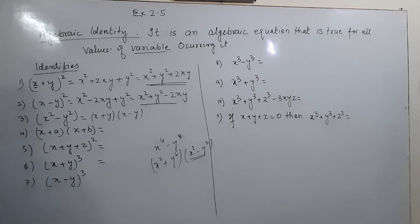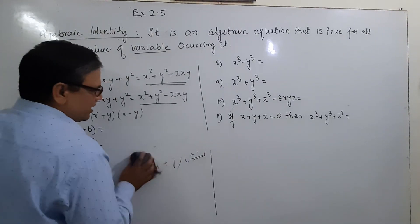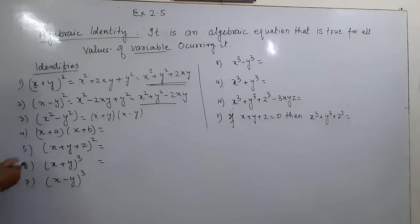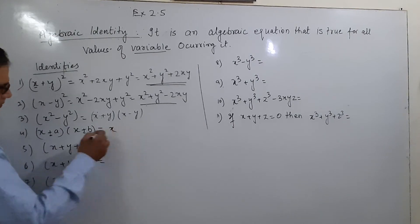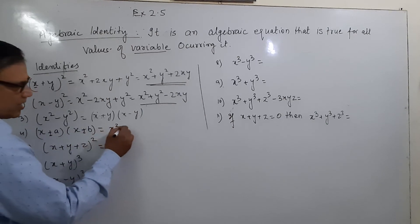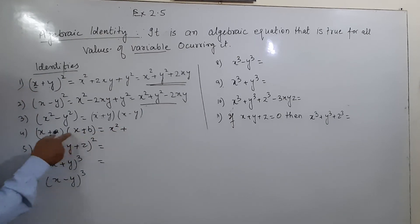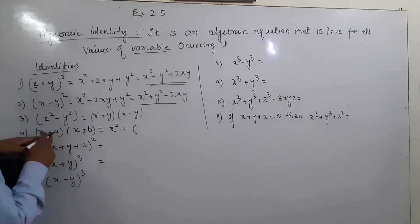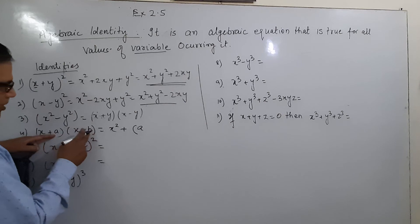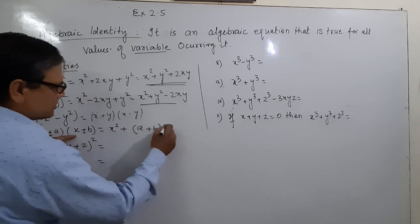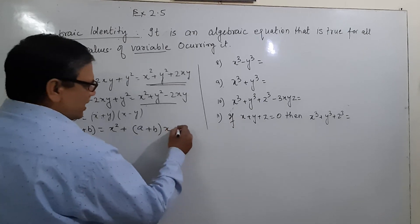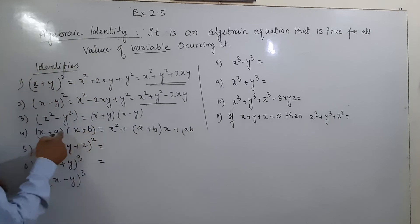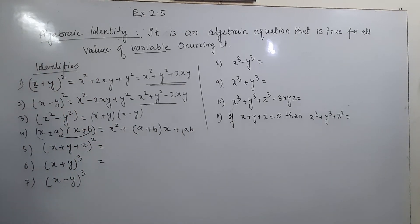For the identity (x+a)(x+b), we first write x squared, then always put plus. Next we write x multiplied by the sum of a and b, and finally we write the product of a and b. So (x+a)(x+b) = x² + (a+b)x + ab.